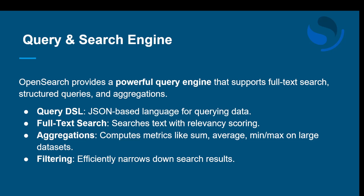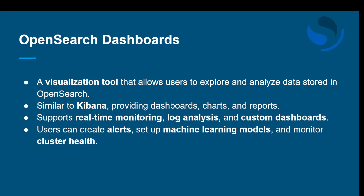Filtering allows you to efficiently narrow down search results. If you need a specific type of data, you can add filters and search for whatever data you need as per your requirement. The query and search engine helps in understanding component interactions in an efficient way, which is how the OpenSearch system manages and implements searches.